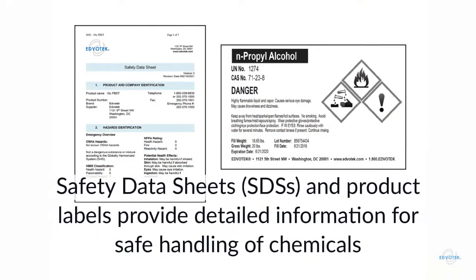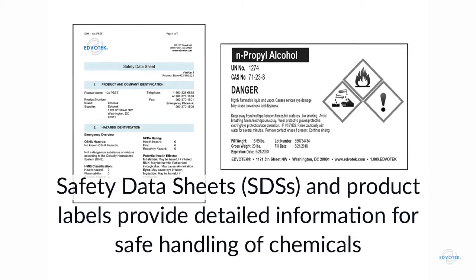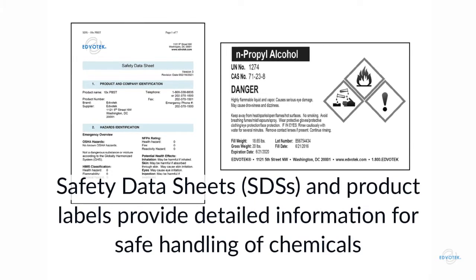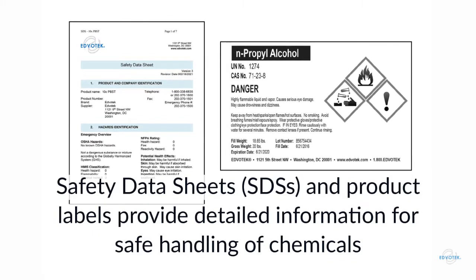Safety data sheets and product labels provide the detailed information we need to safely handle chemicals in the laboratory. Each resource includes standardized signal words, pictograms, and precautionary statements. These simplified documents help reduce confusion and ensure that products are used in a safe manner.